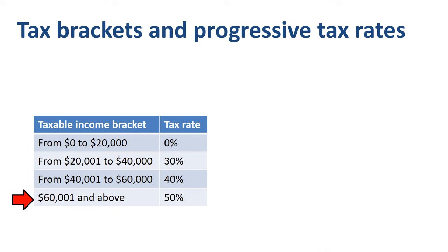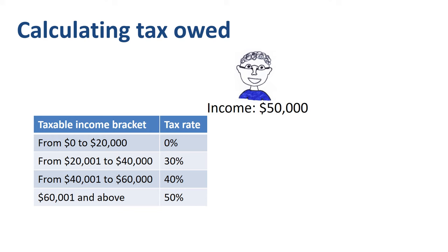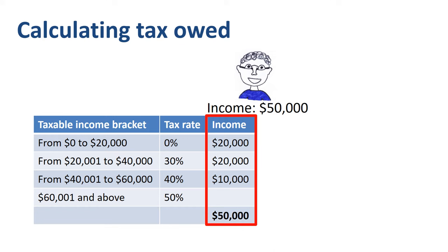Let's calculate how much tax John owes. He has a taxable income of $50,000. Step one is to split that $50,000 over the tax brackets. $50,000 fills both of the first two brackets fully, it fills half of the third bracket, and none of the fourth bracket.